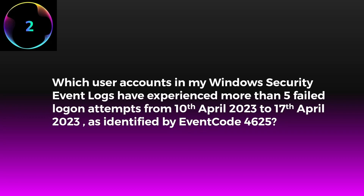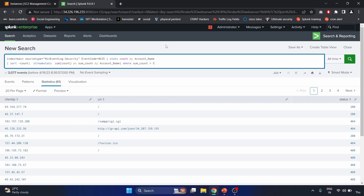Scenario two: Which user accounts in the Windows Security event logs have experienced more than five failed logon attempts from April 10th to April 17th, 2023, as identified by event code 4625? We already know the event code, so we check how many failed login attempts occurred during that date range. This SPL command searches for security events with event code 4625 in the eventlog security source type of the main index.